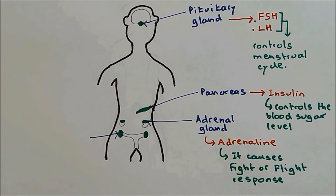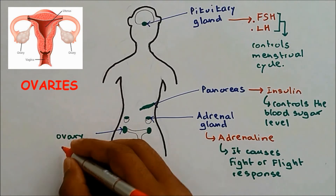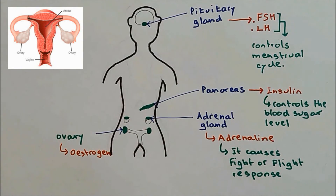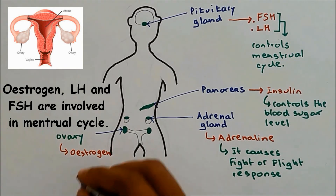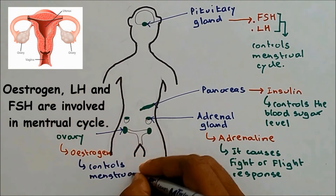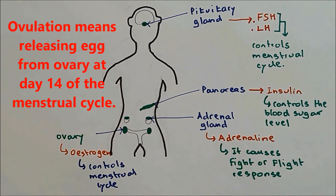The last gland I'd like to talk about is the ovary. The ovary produces and releases oestrogen. Oestrogen has the same function as FSH and LH — it controls the menstrual cycle. The ovary also releases an egg at day 14 of the menstrual cycle, and that process is called ovulation.